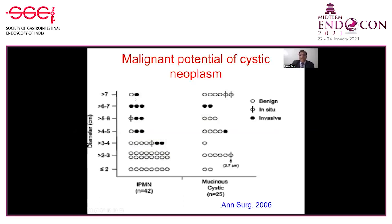The malignant potential of cystic neoplasms largely depends on size. If size is less than three or four centimeters in both IPMN and MCN, hardly any patient will have a malignant lesion. But the moment size increases beyond four centimeters, particularly in IPMN, most patients have a malignant lesion and some MCNs also show malignant lesions.